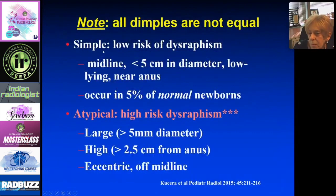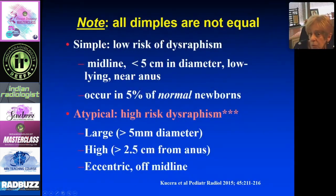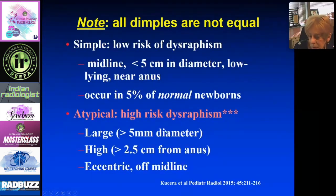Not all dimples are the same. If the dimple is low — near the anus, midline, short, less than 5 centimeters — it is low risk for a spinal abnormality. We still study these kids; this finding is seen in about 5% of normal newborns. If the dimple is high, large, further from the anus, or off midline, there is a higher risk of having an underlying abnormality.